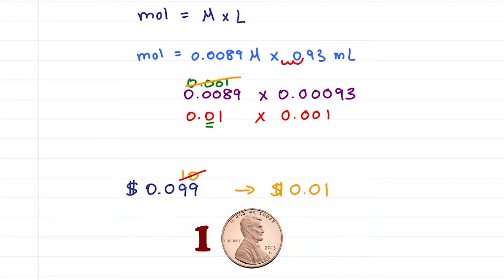Instead, when the nine rounds up to a ten, we put that one a decimal place over to the left to show that it got bigger, giving me 0.1. And that is how we got these values.